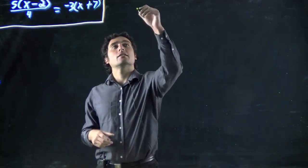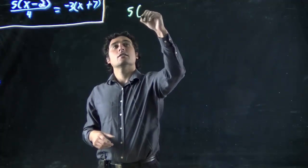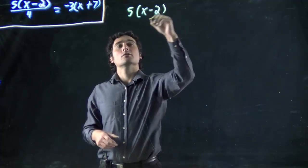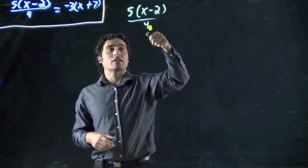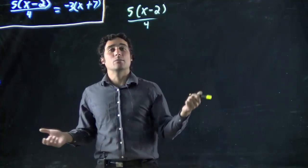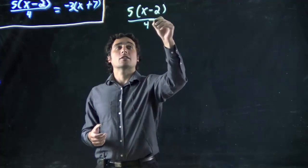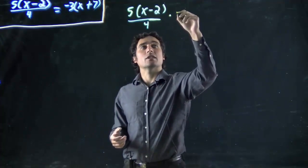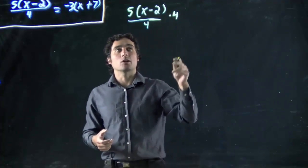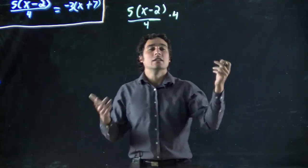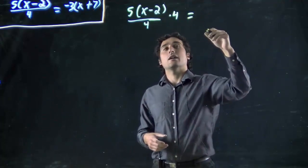Well, I've got 5x minus 2 all over 4. I know I'm going to have to get rid of this number on the bottom somehow, at some point. Why don't I do it right off the start? I'm going to multiply both sides by 4. I'm using dot for multiplication, there's an x in the equation, I don't want to confuse myself.